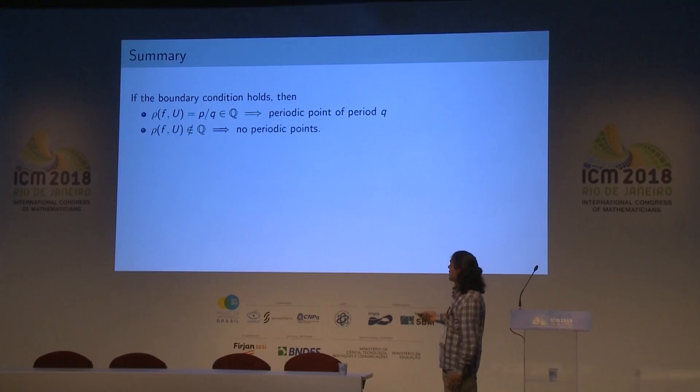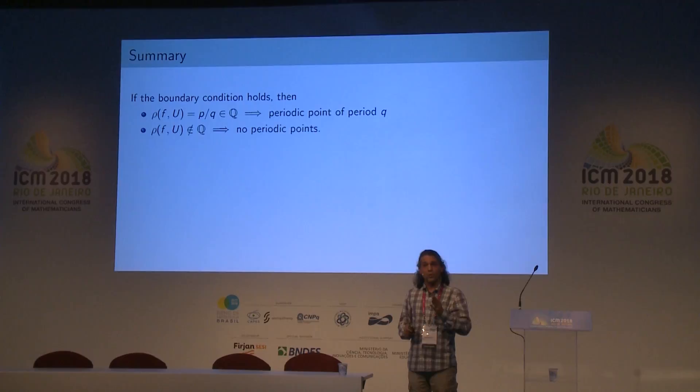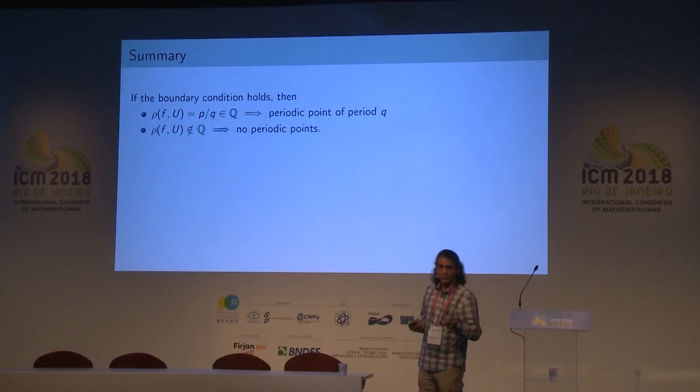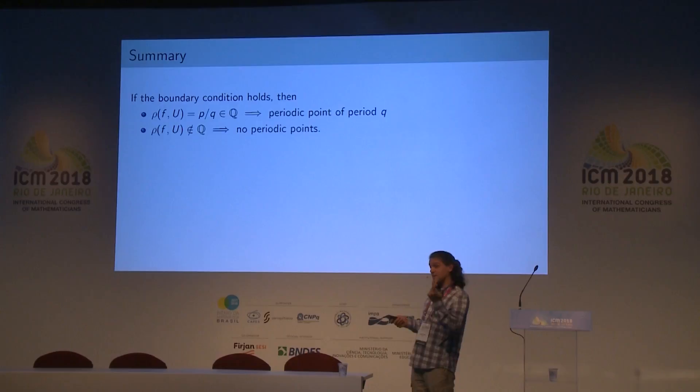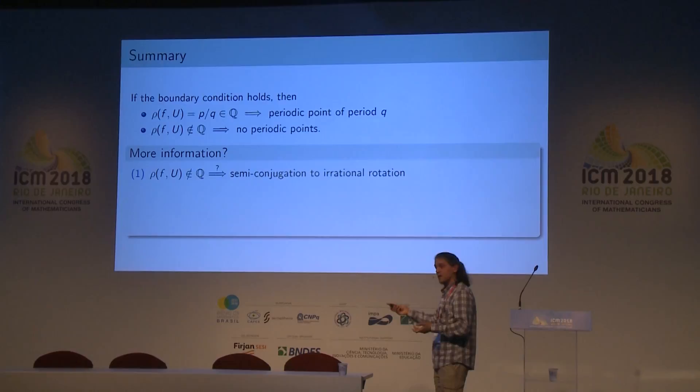To summarize: if the boundary condition holds, then when the prime ends rotation number is rational, there is a periodic point of period equal to the denominator of that rational number. When it is irrational, there are no periodic points. But in the model case we had much more information — we knew that for irrational rotation number, the dynamics is semi-conjugate to an irrational rotation. Does this hold for general boundaries? The answer is no, even in the area-preserving setting, because Handel's example with the pseudo-circle is not semi-conjugate to an irrational rotation.